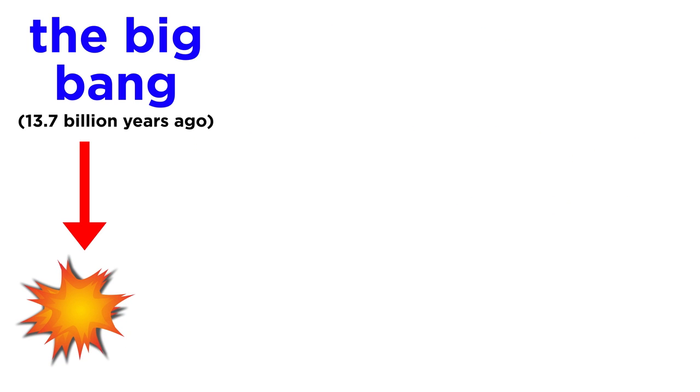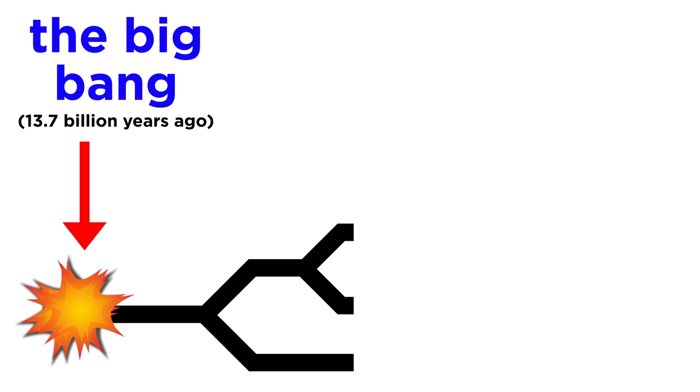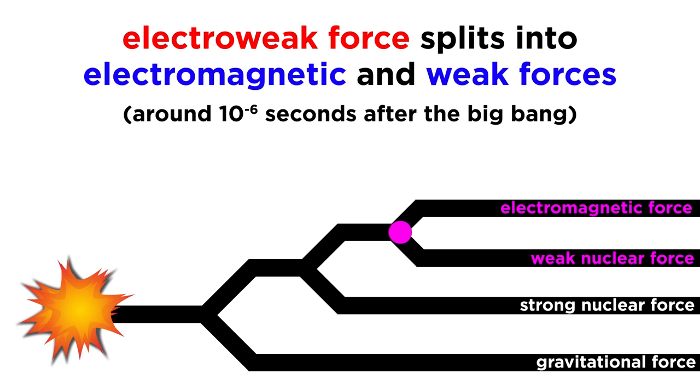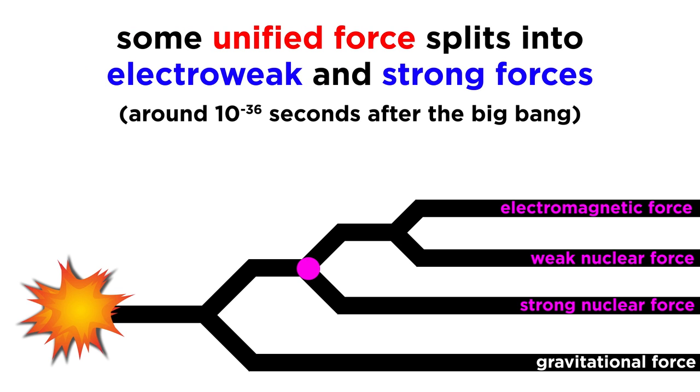We also understand that after the Big Bang billions of years ago, the electromagnetic force and the weak nuclear force became distinct forces after existing for a short duration as a singular force, called the electroweak force. For a short time before that, this electroweak force and the strong nuclear force were also one even more fundamental force.